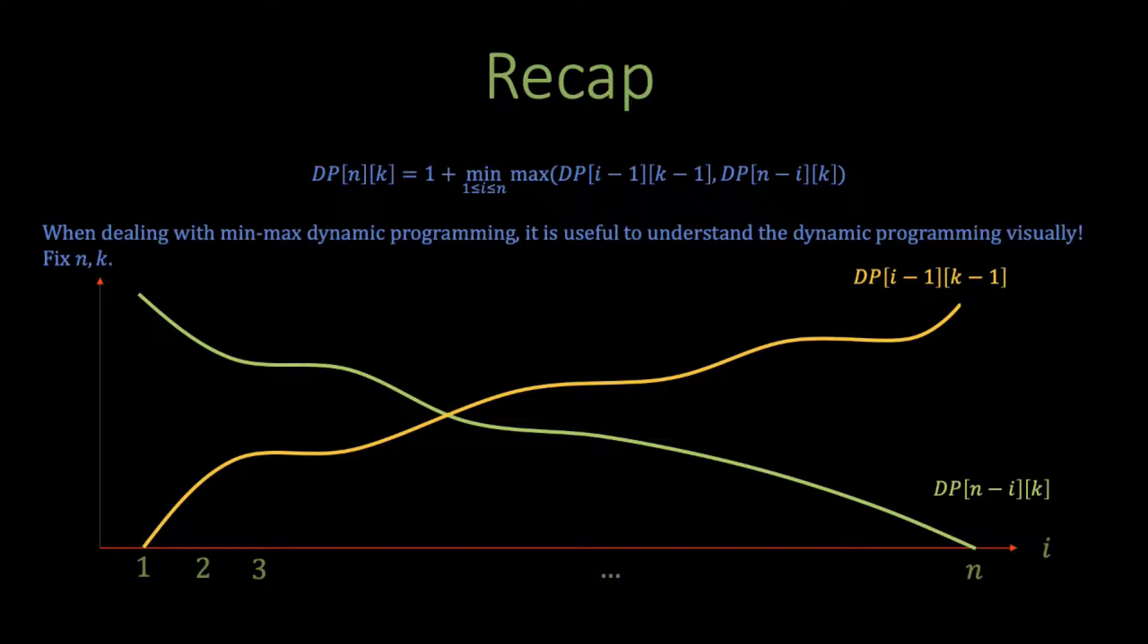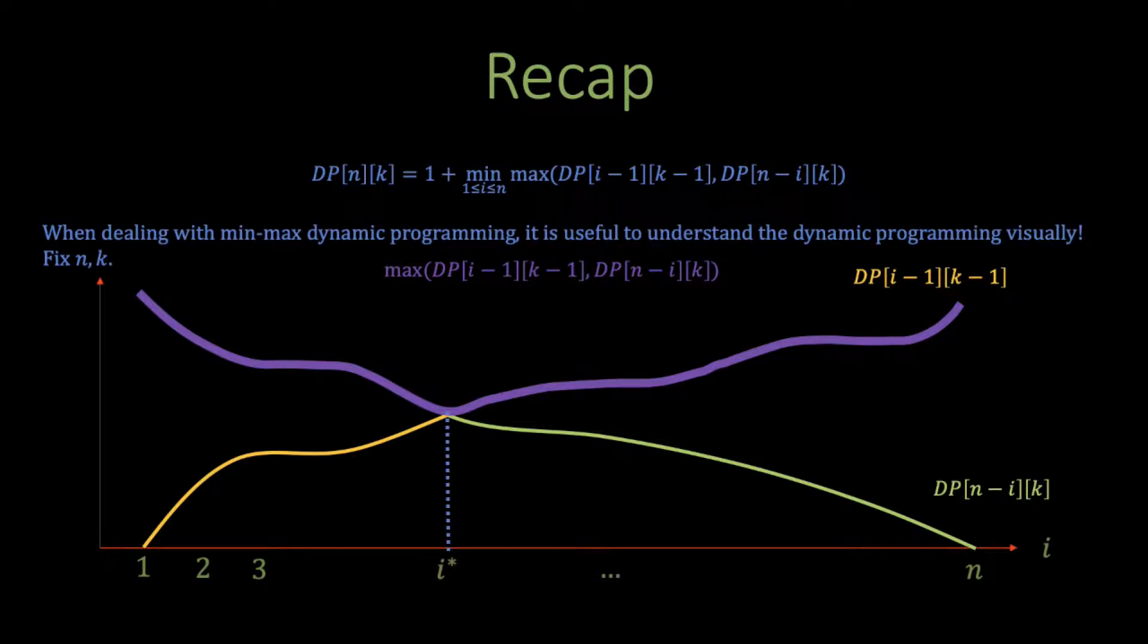Next, the recurrence takes the maximum of both curves, or the upper envelope of both curves. This is the curve in purple I'm showing you here. Finally, the last step is to find the i that minimizes this purple curve. Well, it just so happens that i* is actually the intersection of DP[i-1][k-1] and DP[n-i][k]. In other words, for fixed n and k, the whole recurrence can be worded as finding the intersection of DP[i-1][k-1] and DP[n-i][k].